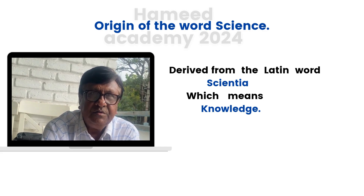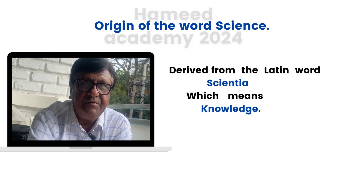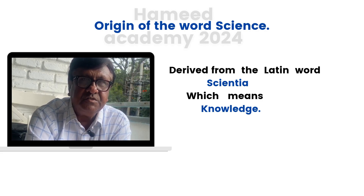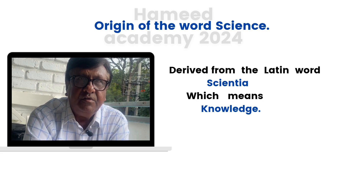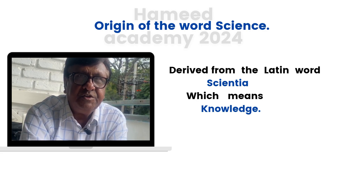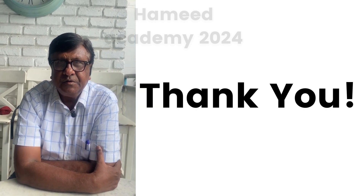Now we'll try to know how the word science is derived or originated. The word science is originated or derived from the Latin word 'scientia', which means knowledge. So in this video we learned what is meant by science and how the word science is derived. That's all for today, thank you.